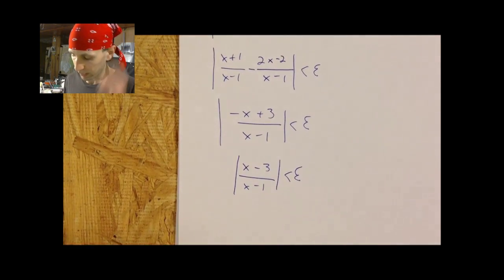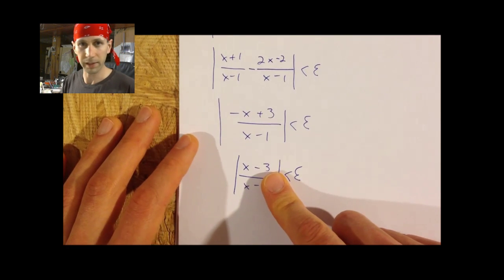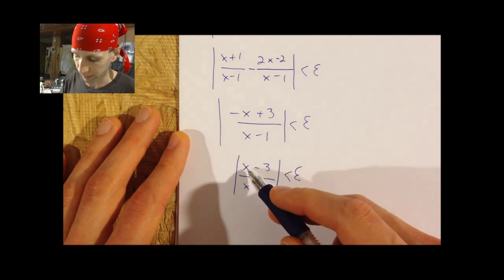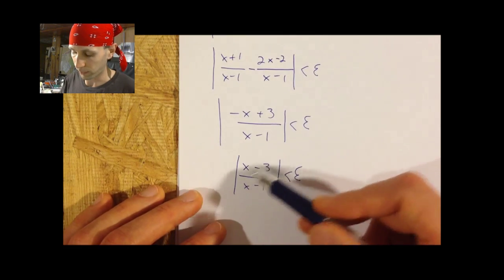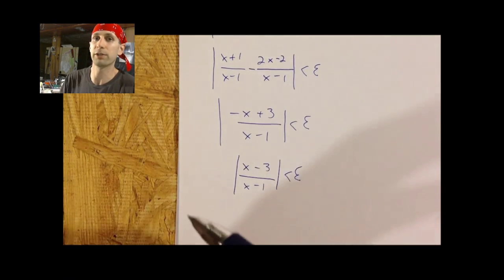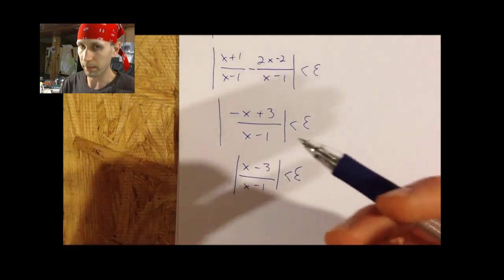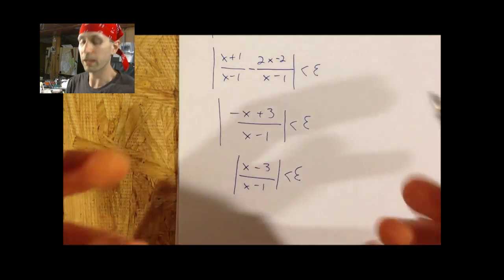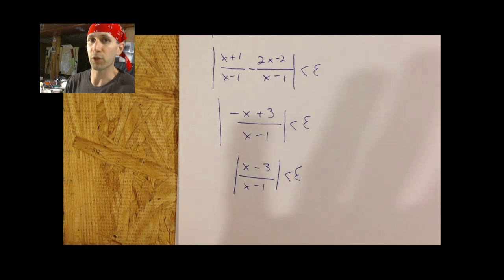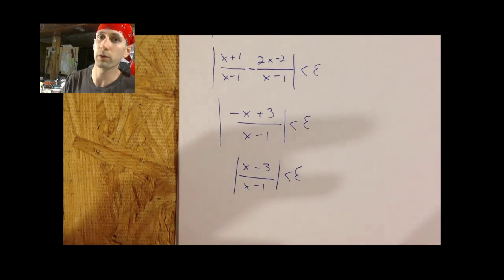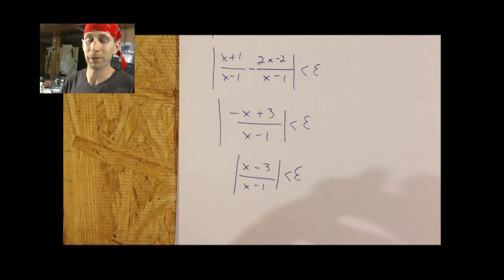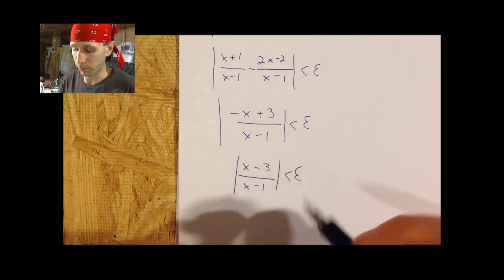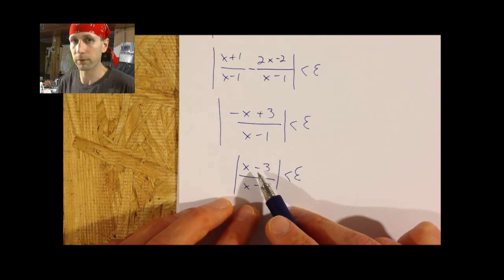Right away this is looking like something that can't be made arbitrarily small, because it's got x on top and x on the bottom. And we know that as x gets larger and larger, this value is actually approaching one. So that's a suggestion that maybe it might not work — you know that it's x over x, so eventually this thing is not going to keep getting smaller. It's going to be pretty much equal to one for large enough values of x.